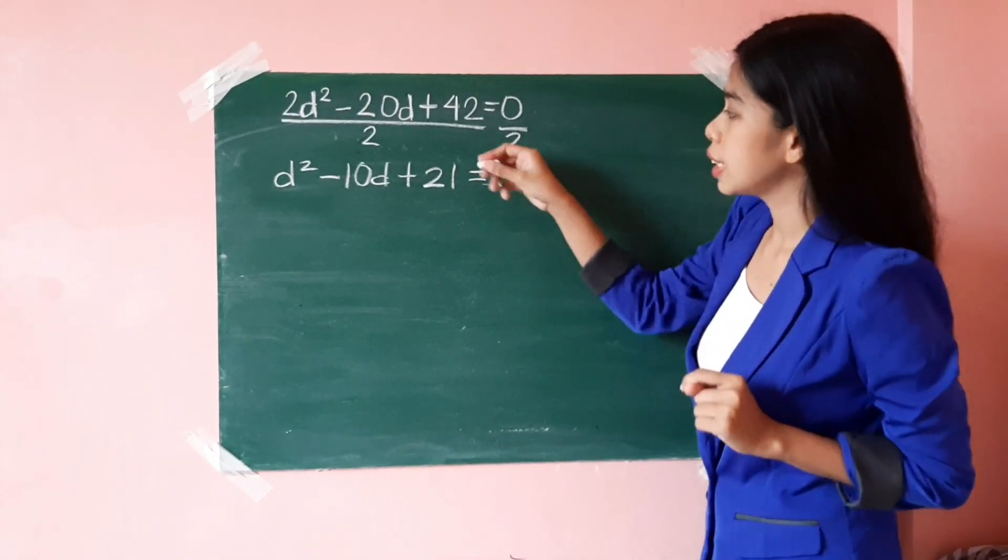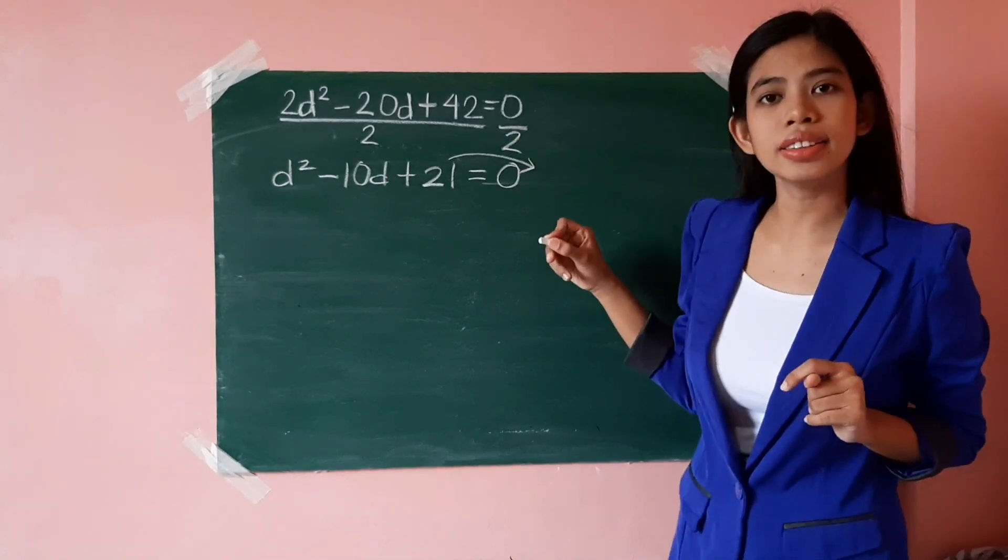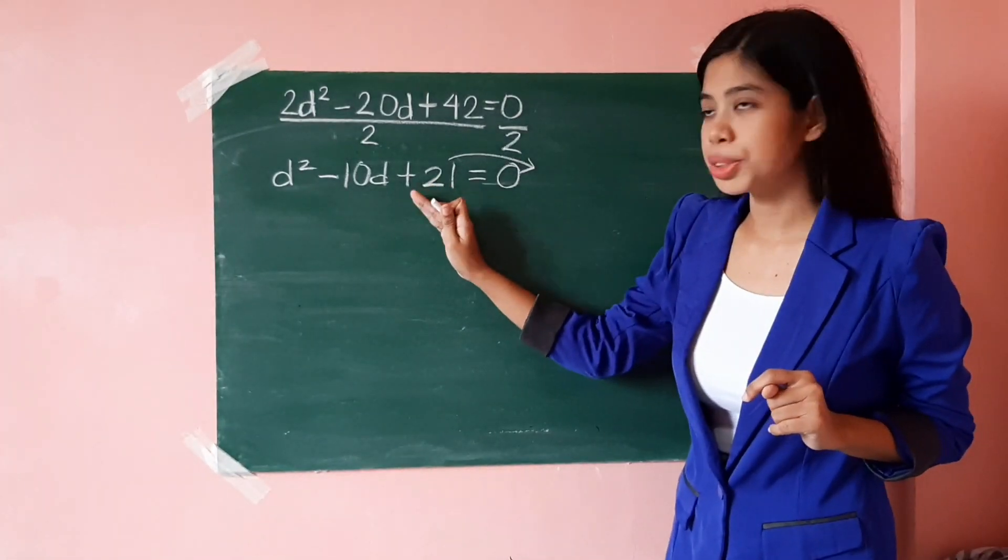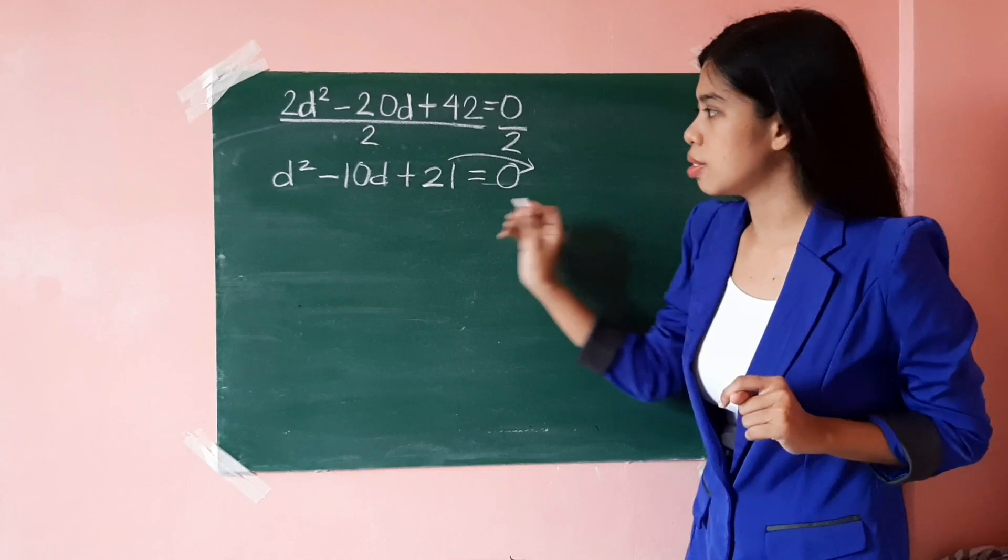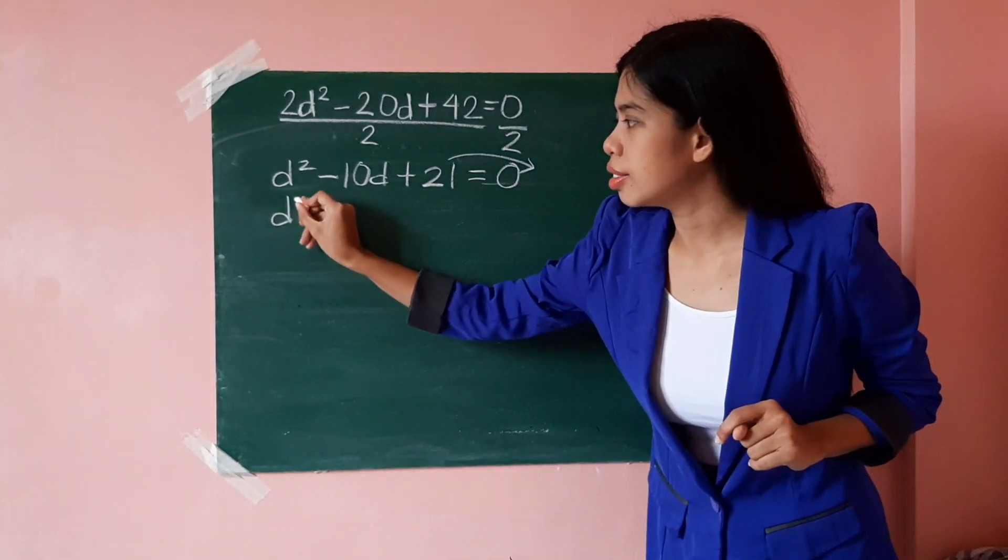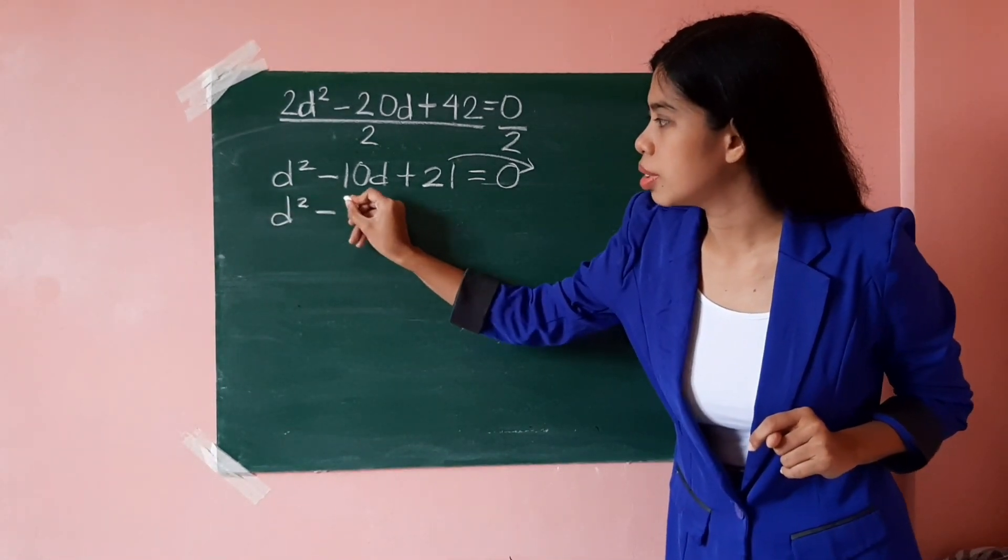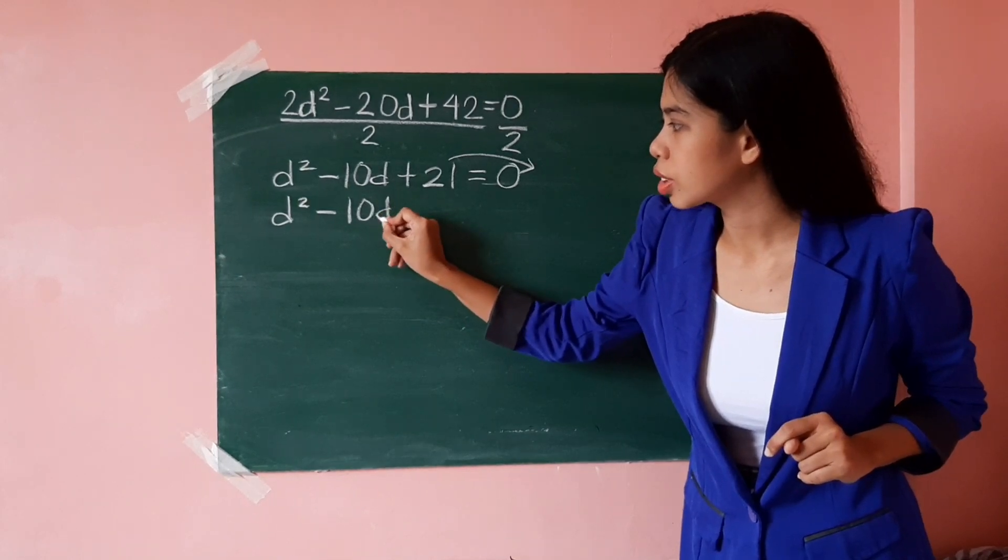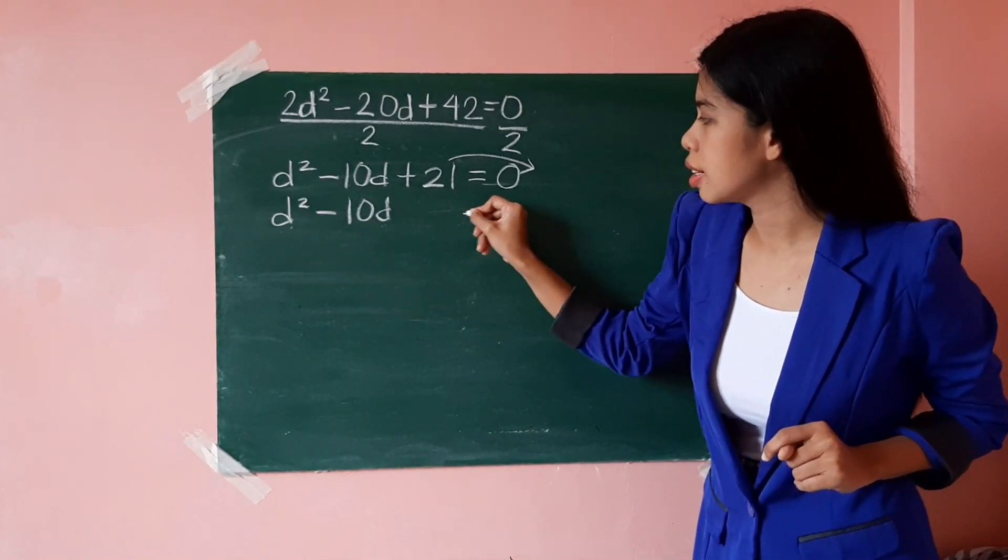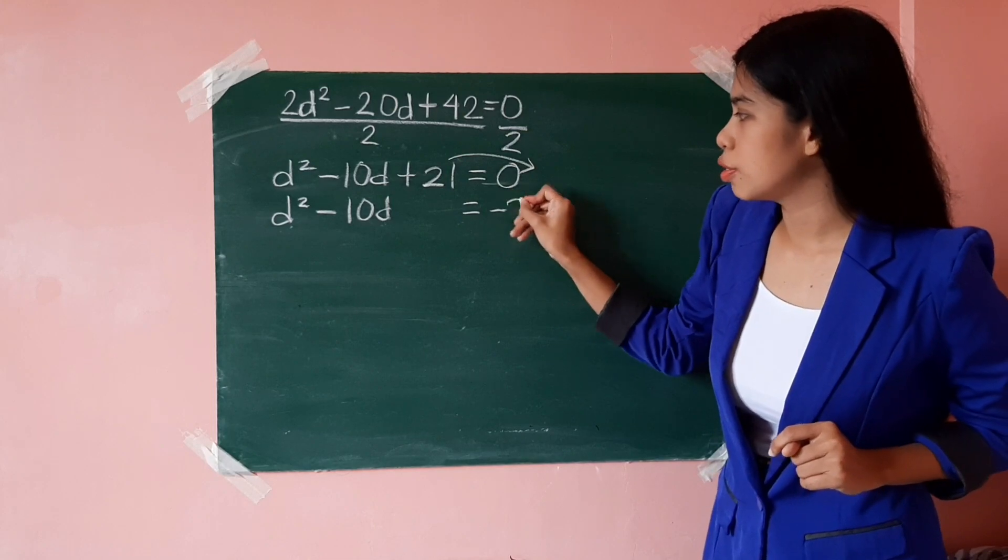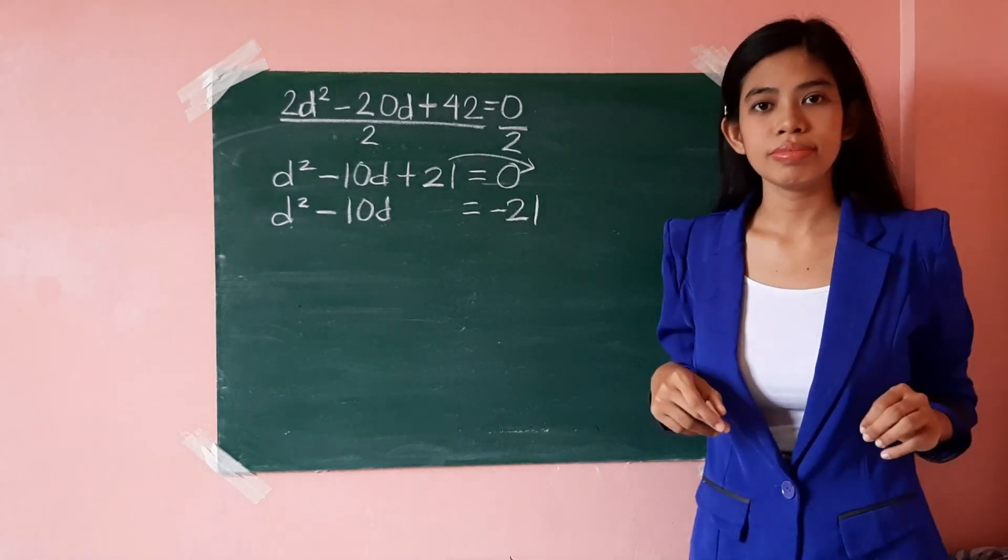So, all you have to do is to transpose the constant term to this side or simply subtract 21 on both sides of the equation. So, that's d² minus 10d equals negative 21.